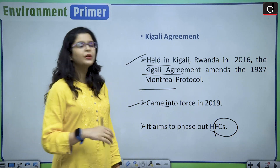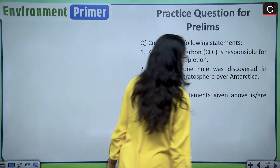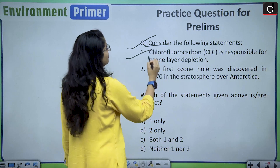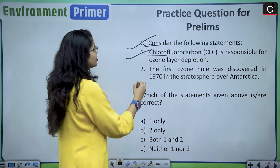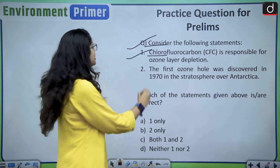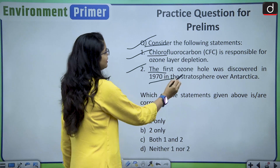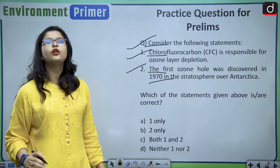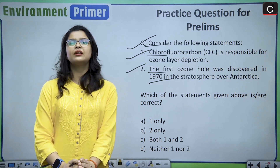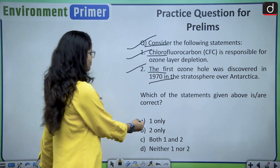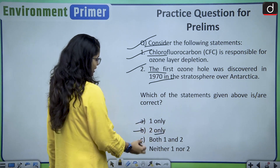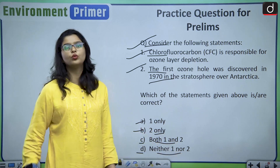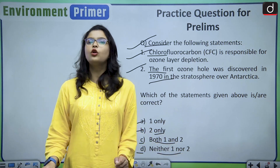Now let us see a practice question for your prelims examination. Consider the following statements: Statement 1 — chlorofluorocarbons are responsible for ozone layer depletion. Statement 2 — the first ozone hole was discovered in 1970 in the stratosphere over Antarctica. Which of the following statements given above are correct? Option A: 1 only. Option B: 2 only. Option C: both 1 and 2. Option D: neither 1 nor 2. Kindly drop your answers in the comment box below.